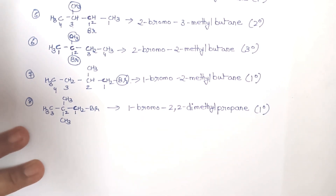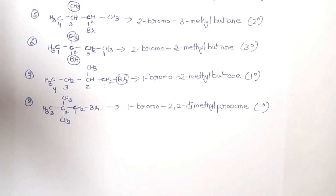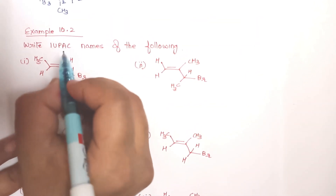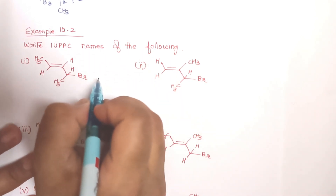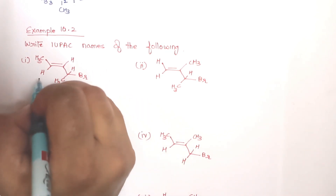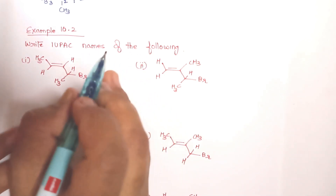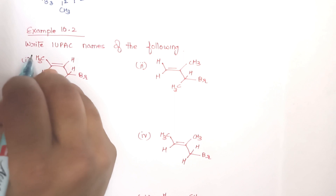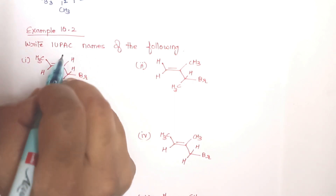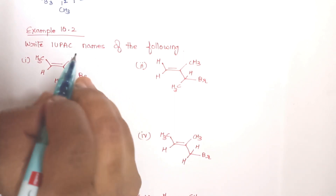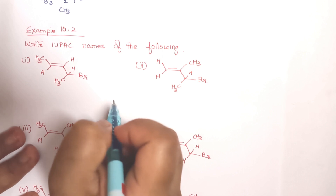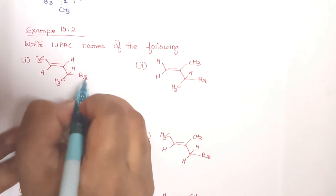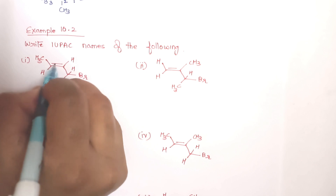Now let us take the next question — Example 10.2: write the IUPAC names of the following compounds. Here we are given the structures and have to write the names. In the previous example there were two substituents — the halogen group and the methyl group — and we numbered so the halogen got the least number.